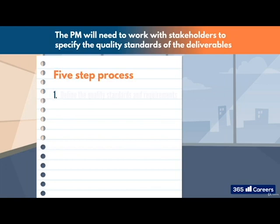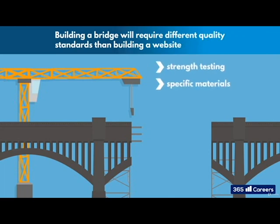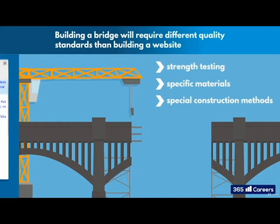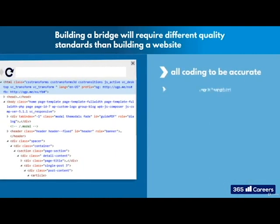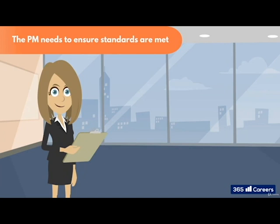First, the project manager and the stakeholders must define the quality standards and requirements, adhering to any laws and regulations. For example, building a bridge will require different quality standards than building a website. A bridge would need rigorous strength testing, specific materials, and special construction methods. While a website would require all coding to be accurate, copy to be proofread, no broken links, and hopefully an aesthetically pleasing design. The project manager needs to identify and factor all criteria that the deliverables need to meet and how the specific project work must be executed to ensure standards are met.